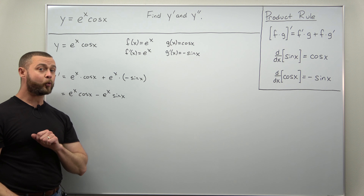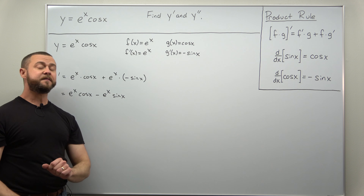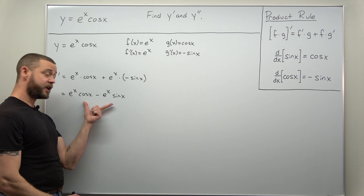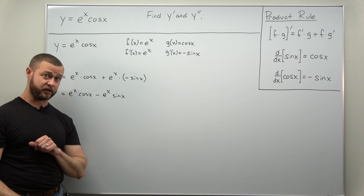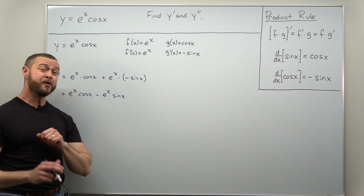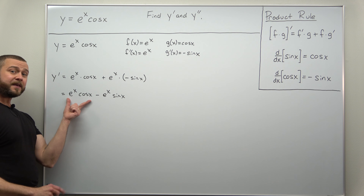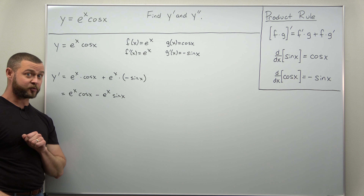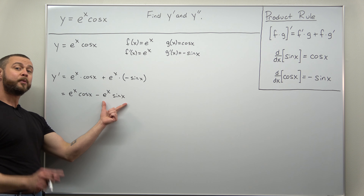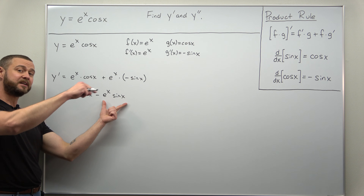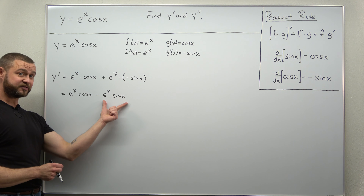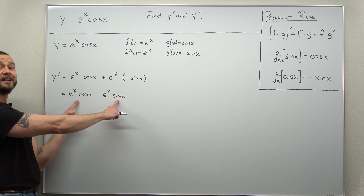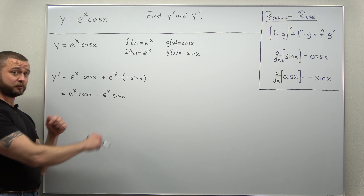Now we want to go one more derivative — the question wants us to find the second derivative y double prime — so we're going to differentiate this using the product rule again. Notice e to the x times cosine of x is a product, and we have another product e to the x times sine of x, so we'd be applying the product rule twice to differentiate each of those terms.